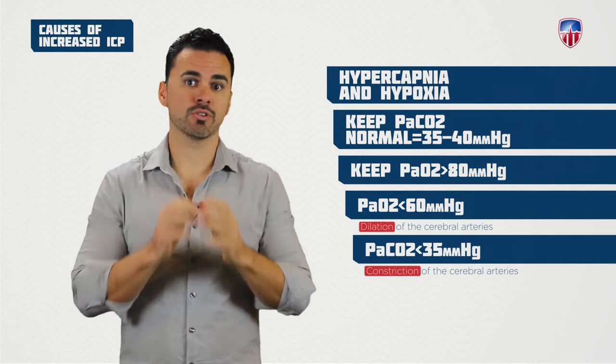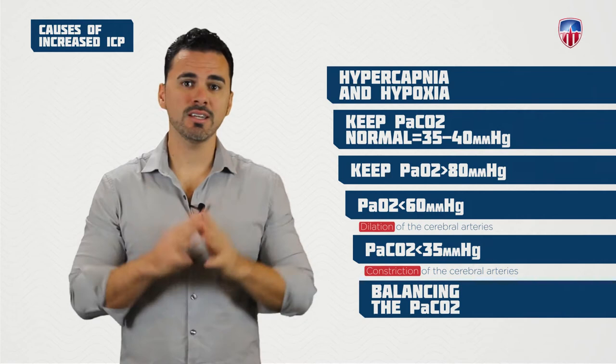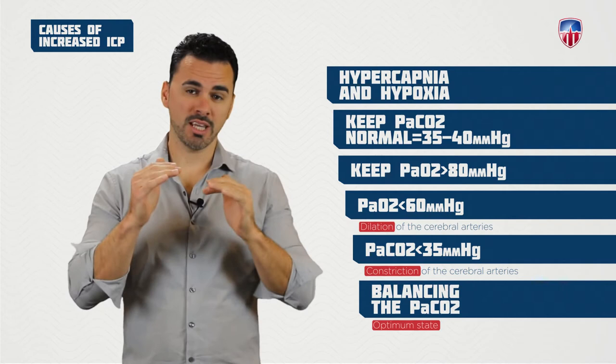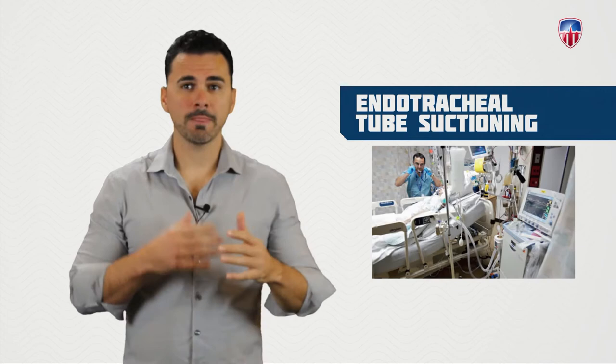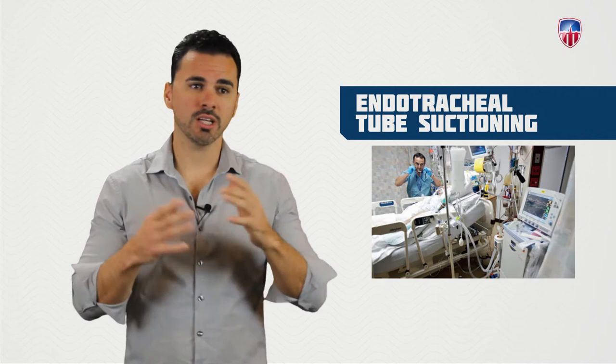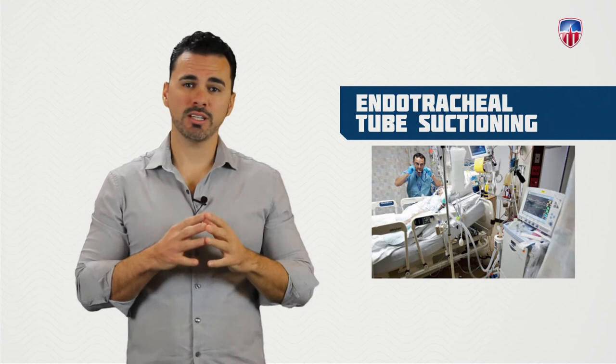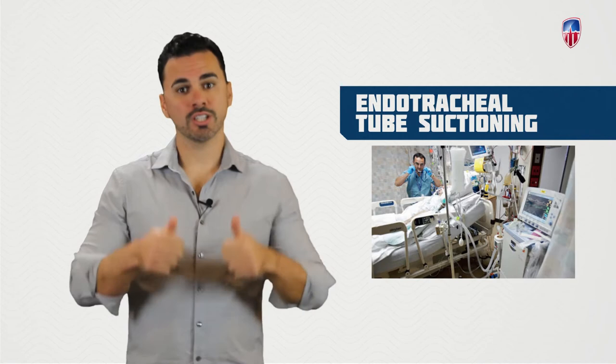Balancing PaCO2 is critical to keeping cerebral blood flow at optimum state. A related exam question may pertain to endotracheal tube suctioning. Performing ET suctioning too frequently is not the right approach. You want to space out ET suctioning because each time you suction, you increase the patient's CO2 level, which is harmful in this population.